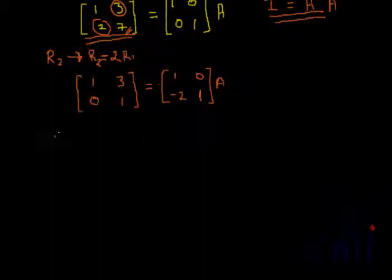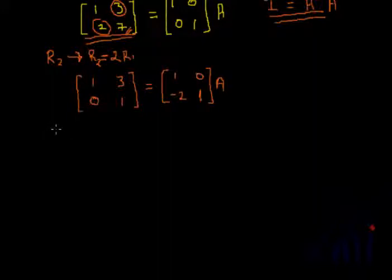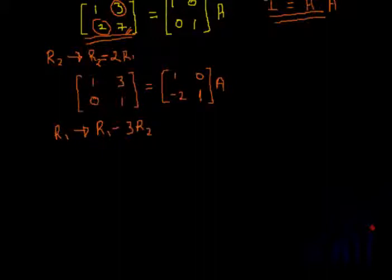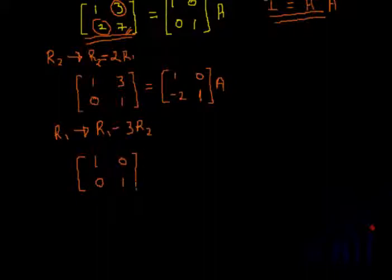We now have a 0 in the lower-left position. To get an identity matrix, we need to make the upper-right element 0 as well. We perform R1 becomes R1 minus 3 times R2. Since the lower-left is already 0, this won't change it; the upper-right becomes 3 minus 3×1 = 0. This gives us the identity matrix [1, 0; 0, 1] on the left-hand side.